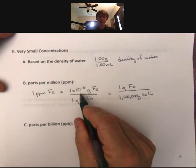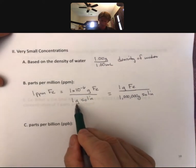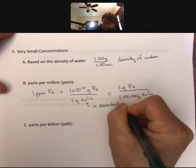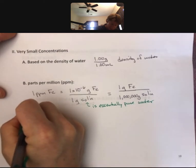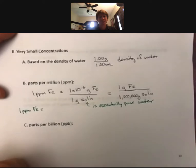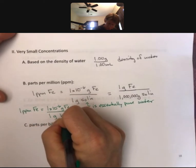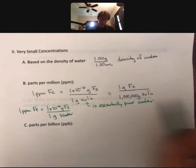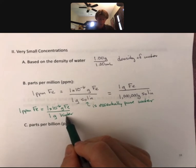With such a very small concentration, one part per million would be a very small molarity — that's why we have these units. The solution is essentially pure water, so you'll often see one part per million written as 1 × 10⁻⁶ grams of the substance divided by 1 gram of water, not solution. All water has something dissolved in it, so all water is technically a solution, but it's more common to write it as water.